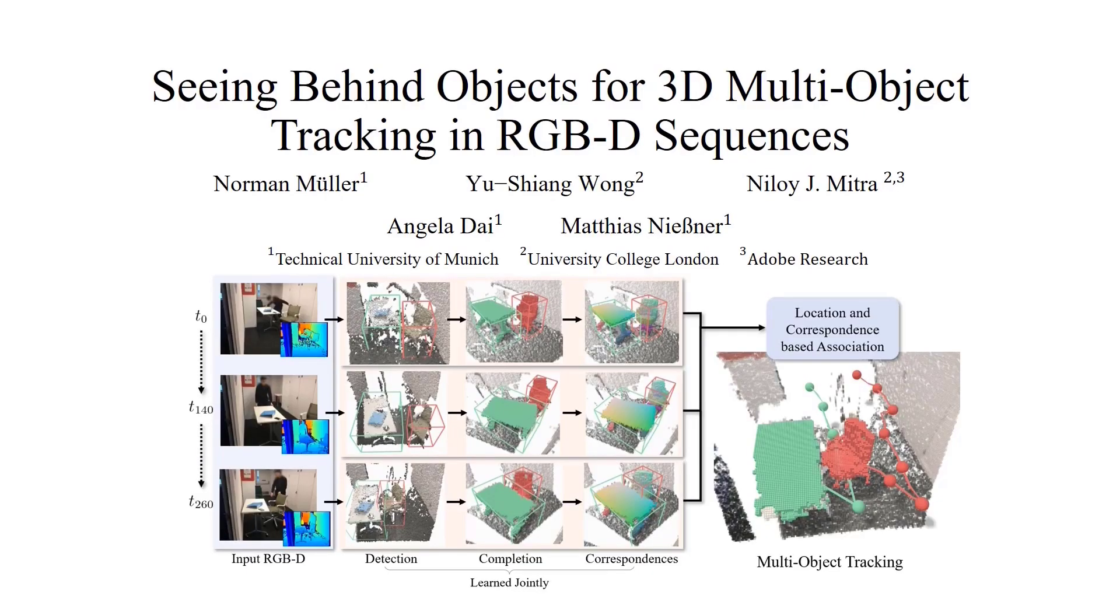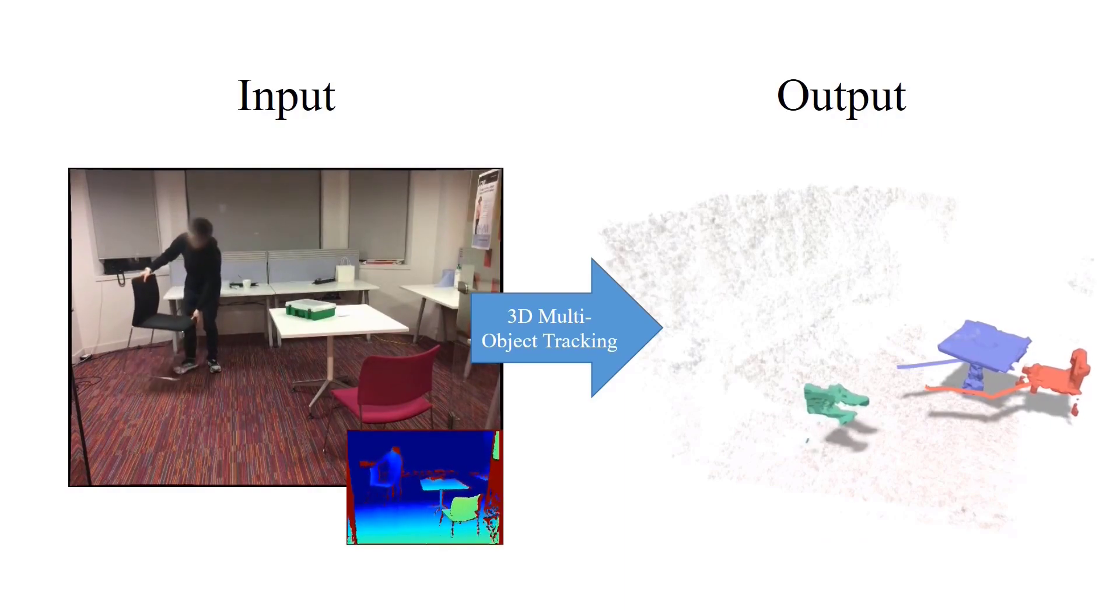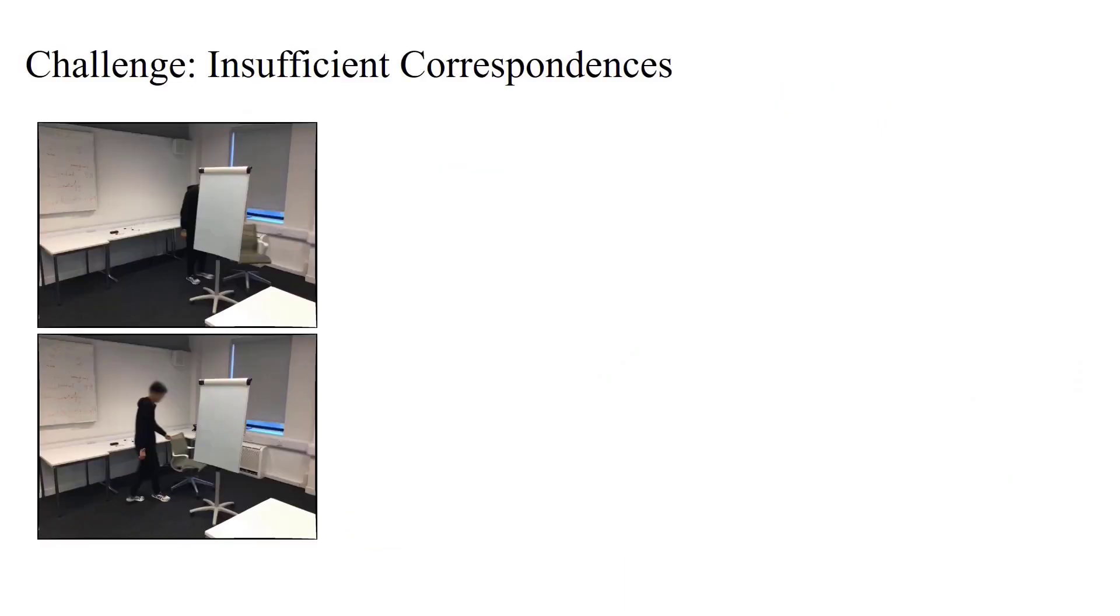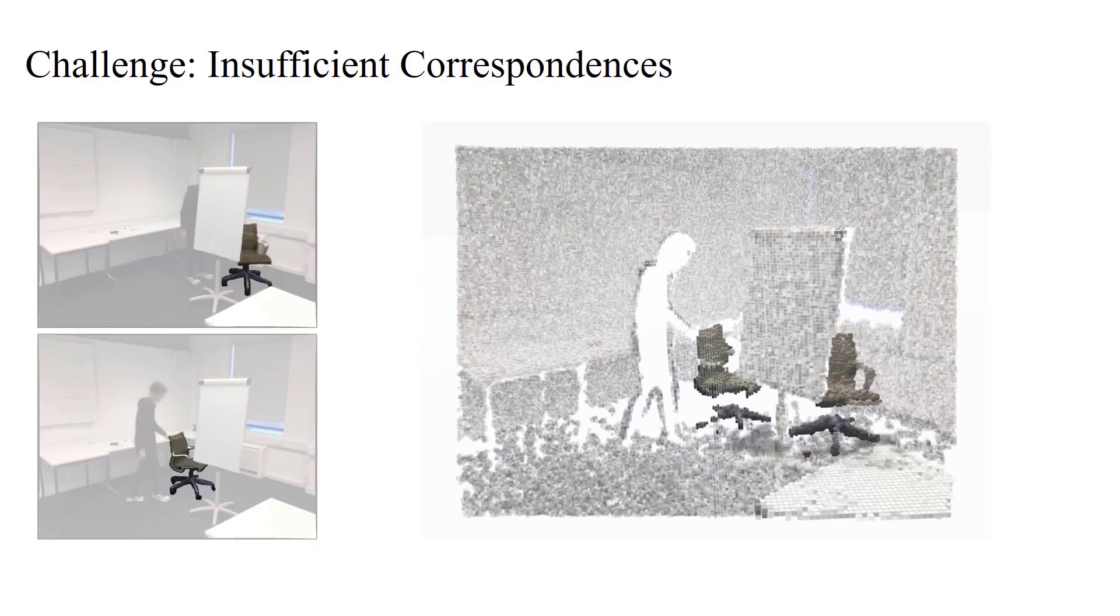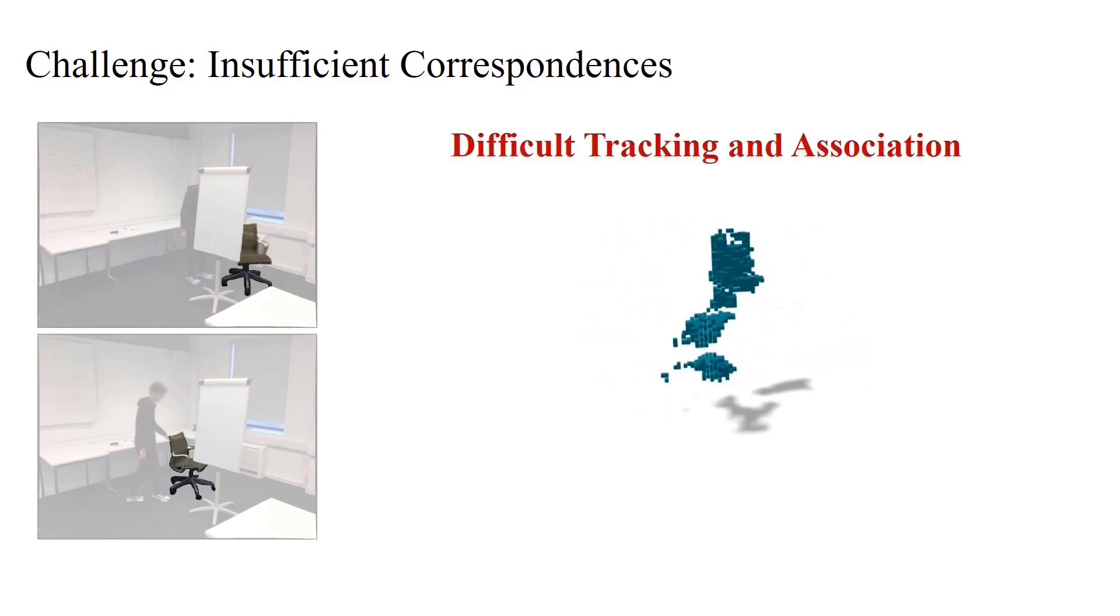We present a novel 3D multi-object tracking approach from RGBD sequences. Tracking objects between different frame observations can be very challenging in many real-world scenarios. For instance, the chair moving behind the occluding whiteboard results in very different views of the chair, leading to a limited set of correspondences, which makes it difficult to associate the objects over time.